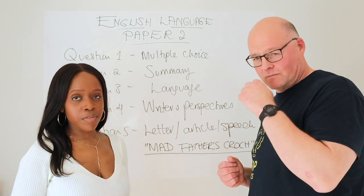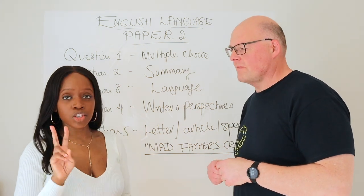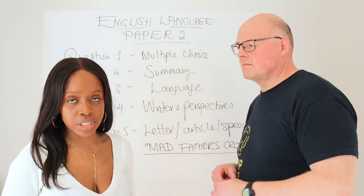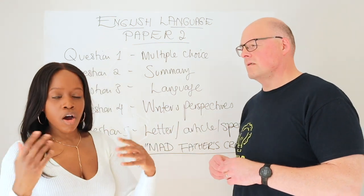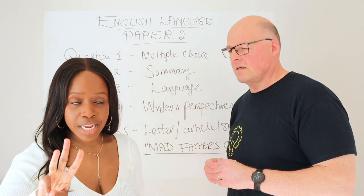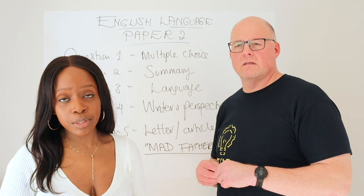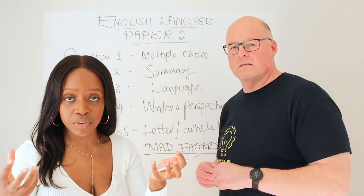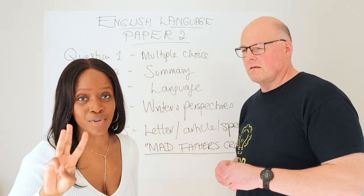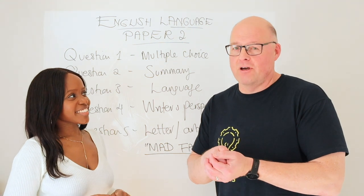For question 4, I would argue this is the most challenging question, primarily because you've got to compare two sources, discuss writer's perspectives, and mix in language and structure points. For this question, my suggestion is to write three comparison PEEL paragraphs where in your opening point you discuss both sources, add evidence from both sources, talk about language or structure observations from both sources, and then link back to the question referring to both sources — three times.